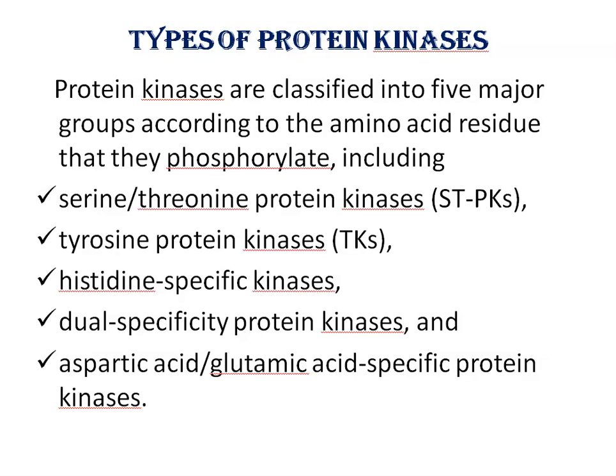Protein kinases are classified into five major groups according to the amino acid residue they phosphorylate: serine-threonine protein kinases (STKs), tyrosine protein kinases, histidine-specific kinases, dual specificity protein kinases, and aspartic acid/glutamic acid-specific protein kinases.